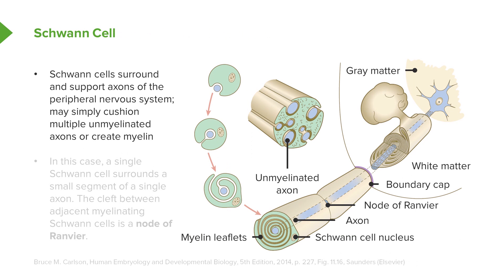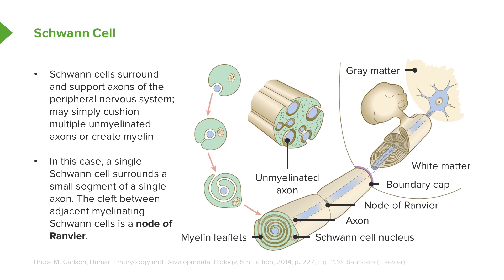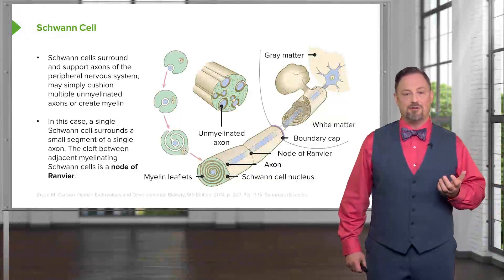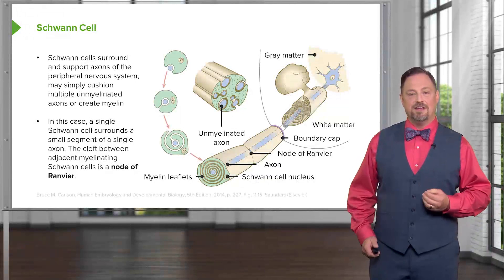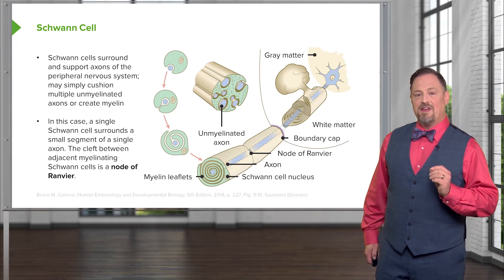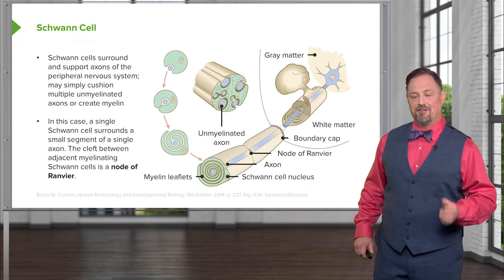Neural crest cells create the Schwann cells of the peripheral nervous system by migrating out along axons and wrapping around them to create myelin. Neighboring Schwann cells meet at what is called a node of Ranvier — the only place where the axon is relatively uncovered — and this allows conduction to occur very quickly down the nerve. Failure of neural crest cell migration can cause issues with myelination. Not every nerve is myelinated, but Schwann cells still wrap around unmyelinated axons to protect them from the outside environment.